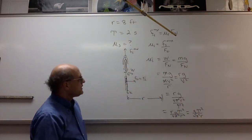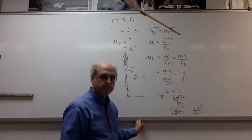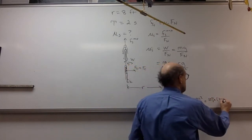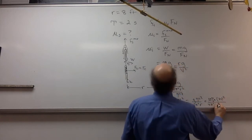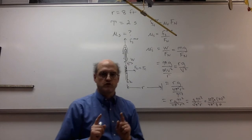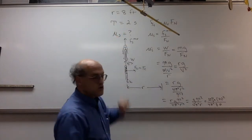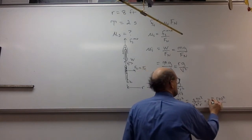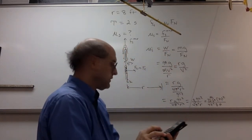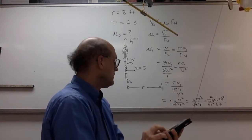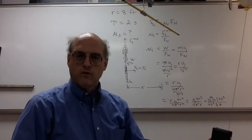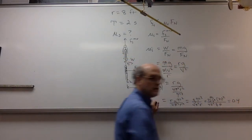We can substitute in the values to get the coefficient of static friction. We use g = 32 feet per second squared since we're in the British engineering system — mistake corrected from 10. So: 32 ft/s² times (2 s)² divided by (4π² times 8 feet). I'm getting 0.4. So the coefficient of static friction is 0.4.